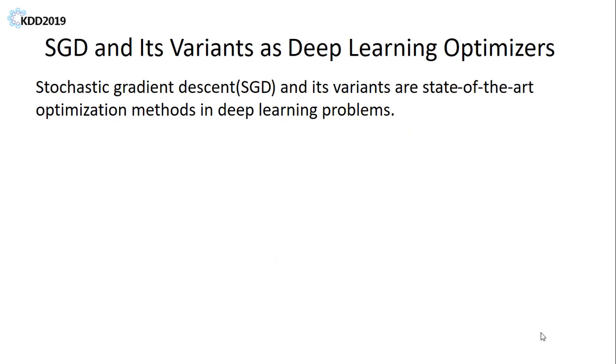Stochastic gradient descent, or SGD, and its variants are the most popular methods in the machine learning community.